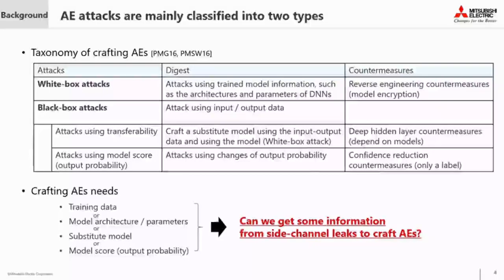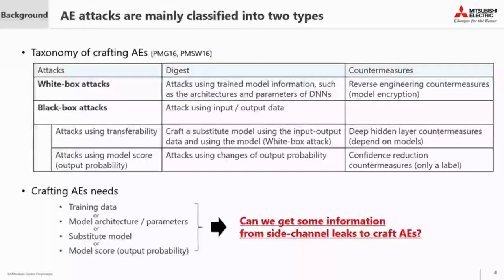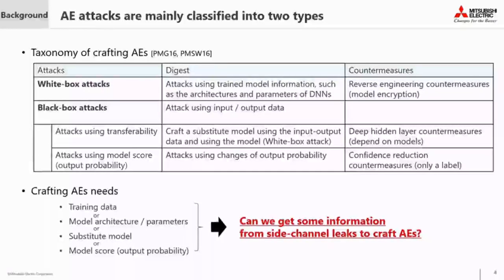However, black-box attacks are more difficult for crafting effective AEs than white-box attacks. In black-box attacks, attacks using transferability can craft effective AEs by building a substitute model using input and output data, then performing white-box attacks using that model. But transferability depends on the kind of trained model, and models with deeper hidden layers have robustness against transferability. Attacks using model scores are also a form of black-box attack, focusing on changes in output probability, though confidence reduction countermeasures can mask that. Our motivation is: can we get some information from side-channel leaks to craft AEs?